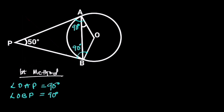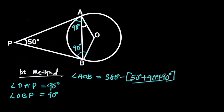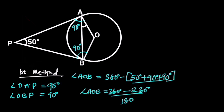Next, let's consider quadrilateral AOBP. In quadrilateral AOBP, angle AOB is equal to 360 degrees minus 50 degrees plus 90 degrees plus 90 degrees. Reason: the sum of angles in a quadrilateral is 360 degrees. 50 degrees plus 90 degrees plus 90 degrees is 230 degrees, and 360 degrees minus 230 degrees is equal to 130 degrees. So angle AOB is equal to 130 degrees.